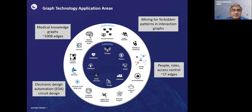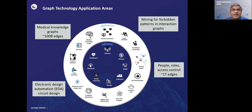We have worked in the past with BAE Systems. They were interested in building a system for real-time intrusion detection in computer networks, using an approach that required building very large interaction graphs. They did intrusion detection by mining this interaction graph for forbidden or blacklisted patterns. We built a system for them that they deployed for DARPA. We also have a customer in the identity management space with very large graphs, ultimately aiming for graphs with about a trillion edges.